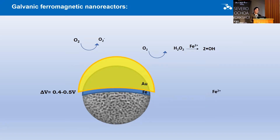One electron can travel to the gold layer and reduce oxygen, or both electrons can travel to the gold layer and in-situ generate hydrogen peroxide. This hydrogen peroxide, with the help of iron cations in the system, can then be reduced to reactive oxygen species (ROS).